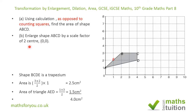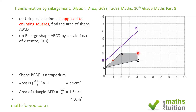Moving on, the next part says: enlarge shape ABCD by a scale factor of 2, centre the origin (0, 0). Point A has coordinates (0, 1); doubling gives (0, 2), so A prime is at (0, 2). Point B has coordinates (2, 3); doubling gives (4, 6), so B prime is at (4, 6). Joining A prime to B prime gives the enlarged side AB.